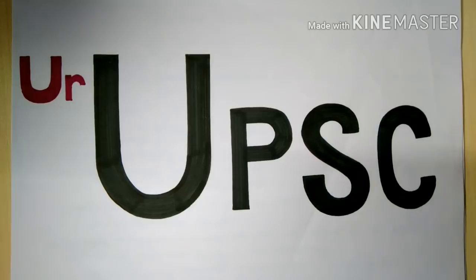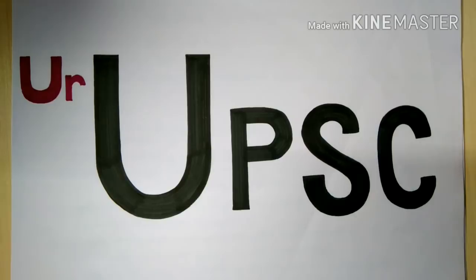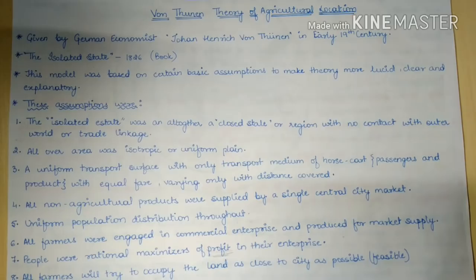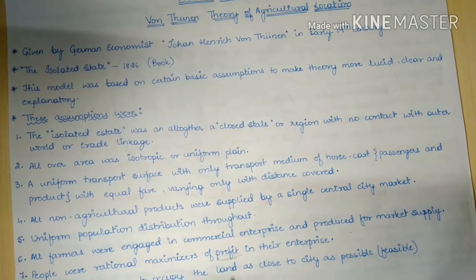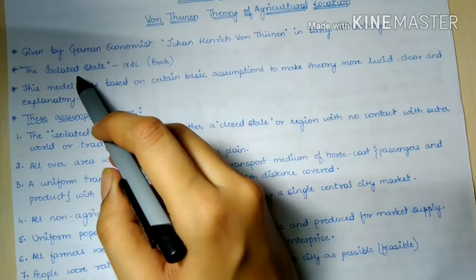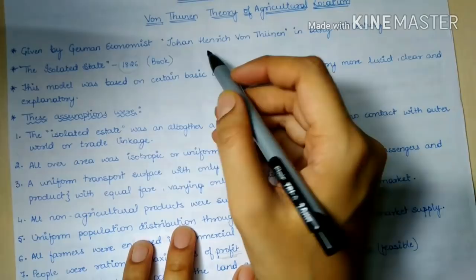Hello friends, welcome back to your UPSC. Today we are going to start with another topic: the Von Thünen theory of agricultural location. Johan Heinrich Von Thünen was not a geographer; he was a German economist. In his book 'Isolated State', published in 1826, he gave this theory of agricultural location.